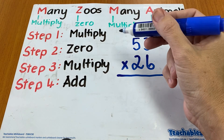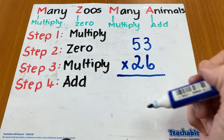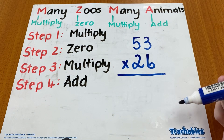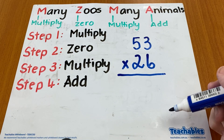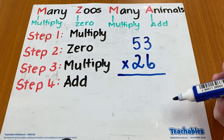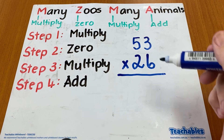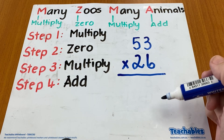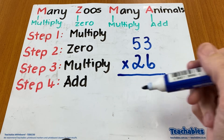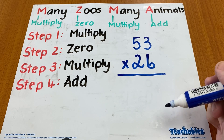As you can see I've got four steps here. The first step being multiply, the second step is zero, step three is multiply again, and step four is add.